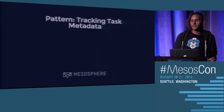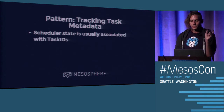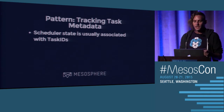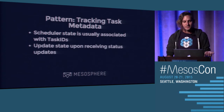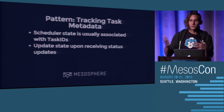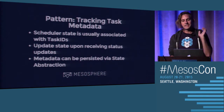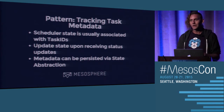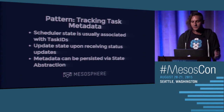Another common pattern is tracking task metadata. Scheduler state is usually associated with task IDs — you'll create a unique task ID per task that you're launching and track whether it's running, completed, or failed. You update state when you get status updates. You can persist this data in the Mesos state abstraction, which is backed by the replicated log or Zookeeper, or an in-memory version useful only for testing.